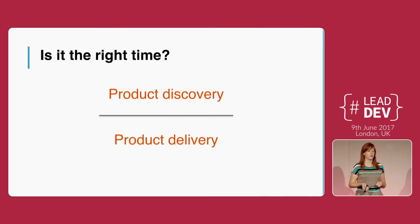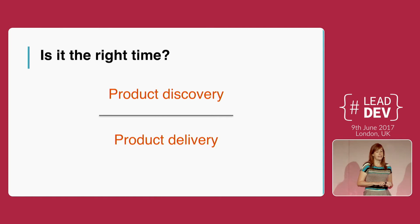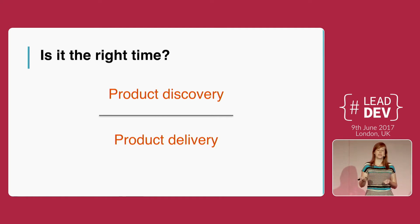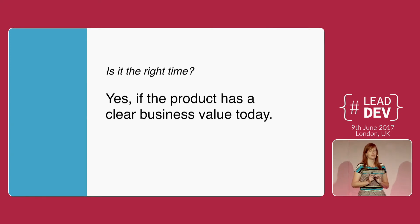At Songkick we had two product development phases that helped define that point: product discovery and product delivery. During discovery, the main goal is to learn as quickly as possible — validate your hypothesis and discover the product-market fit. Once that's validated, product delivery starts, and during this phase you're focusing on stabilising and making sure the product or feature is really easy to change and extend confidently. During product delivery is when investing in tech and a well-planned rewrite could be useful.